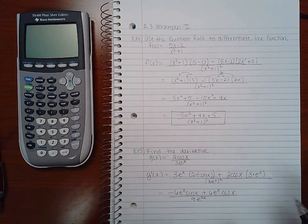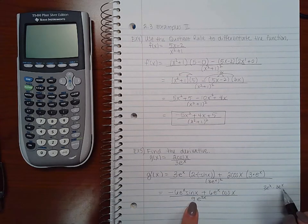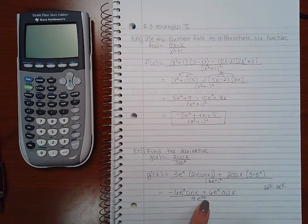Remember, that means 3 e to the x times 3 e to the x. So 3 times 3 is 9. And when you multiply terms with the same base, you add their exponents. And x plus x is 2x.